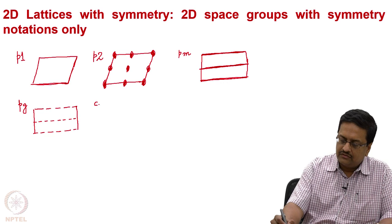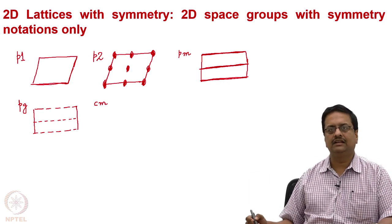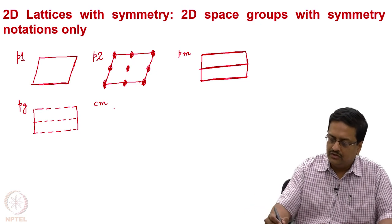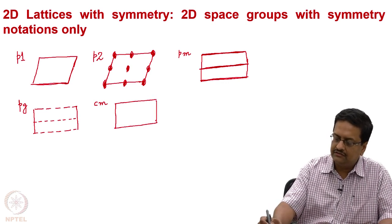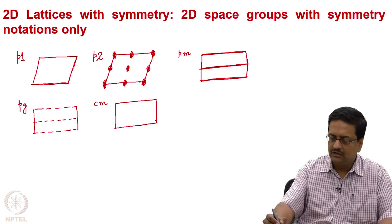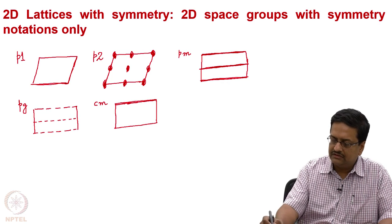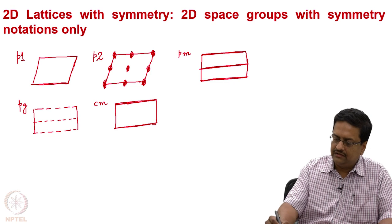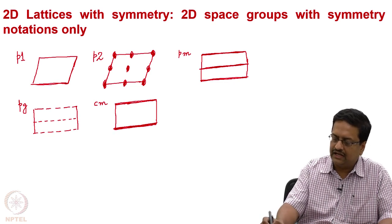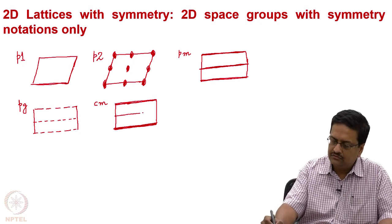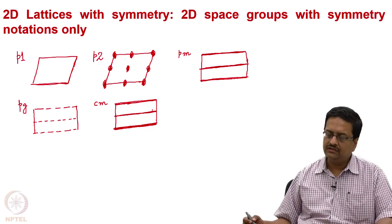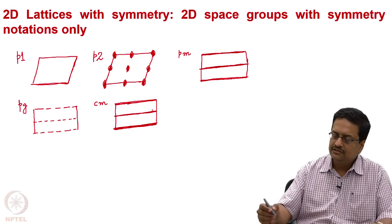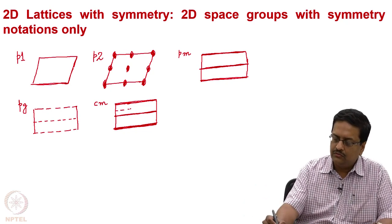Cm is a centered lattice, which means the lattice has one lattice point at the center of the unit cell. The mirror that we are talking about is located at the two sides and also in the middle, as you have a lattice point in the middle of this unit cell. The presence of these two parallel mirrors would give rise to a glide in between.